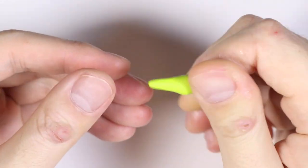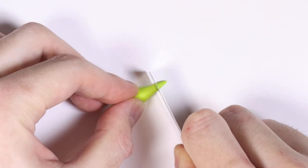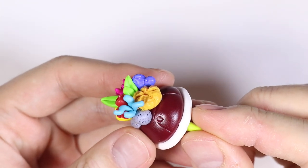For the little tail, we're going to roll out a thin cone and cut it out, and we're going to attach it to the bottom of our shell.